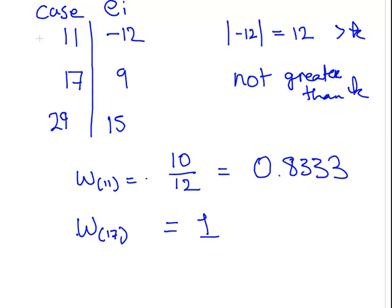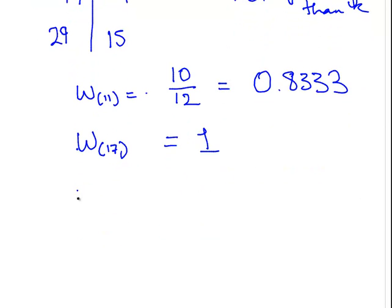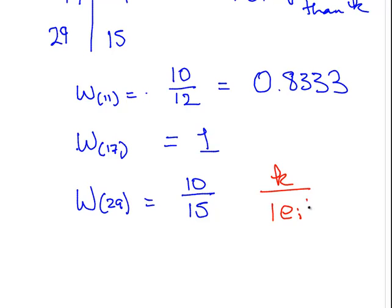Finally, the weighting for case 29 is 10 over 15. Let's remind ourselves what that means: K over the absolute value of E_i. So that is 10 over 15, which is 0.666 and so on.